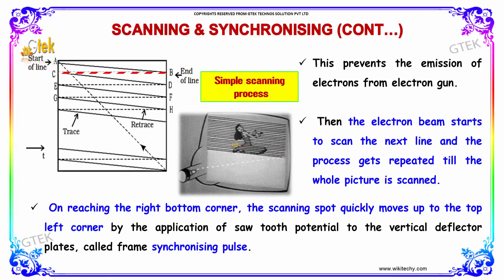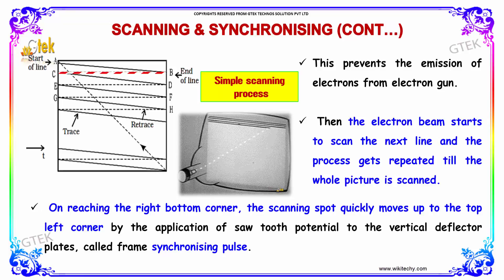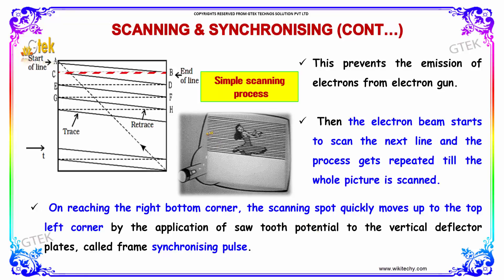Then the electron beam starts to scan the next line, and the process gets repeated till the whole picture is scanned. On reaching the right bottom corner, the scanning spot quickly moves up to the top left corner by the application of sawtooth potential to the vertical deflector plates, called the frame synchronizing pulse.